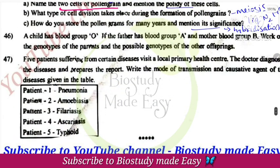Next: a child has blood group O. The genotype is ii. Father has blood group A and mother has blood group B. We need to find the possible genotypes of the parents such that the child can have blood group O.